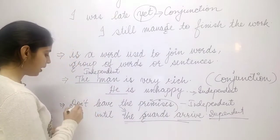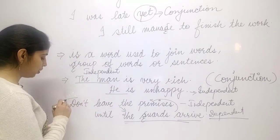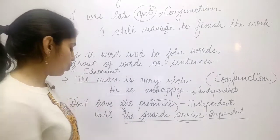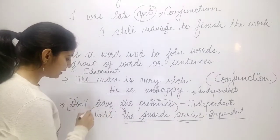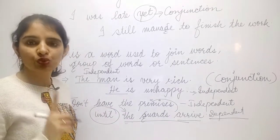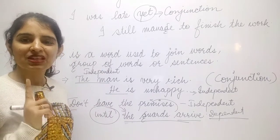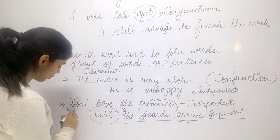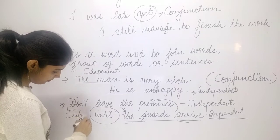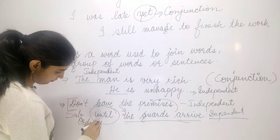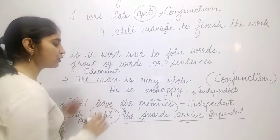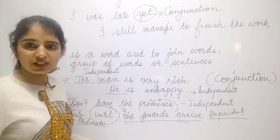So where we have sentences — one independent and one dependent — and we use a conjunction to join them, that conjunction is known as a subordinating conjunction. On the other hand, where both sentences are independent, we cannot say they can't be joined into one sentence.